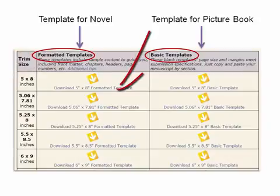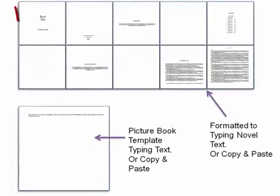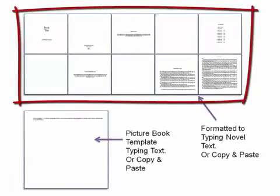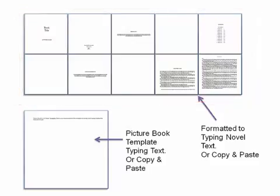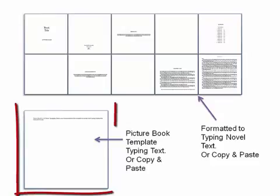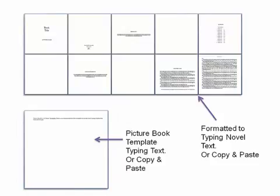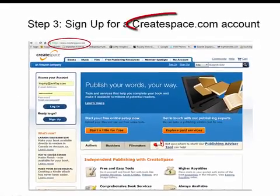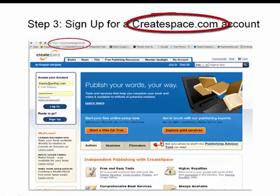Then select the download. As you can see, the top template is for a novel — it's already formatted for you, so all you need to do is type in your information. The lower left template is for a picture book — just replace the text that's already there and start adding your images. Now we're going to actually set up an account at CreateSpace, so go to createspace.com to sign up.